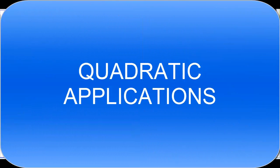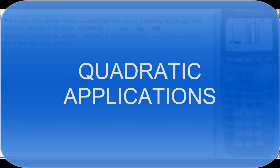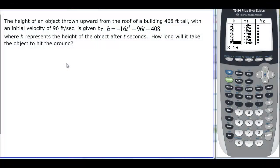This video is going to talk about quadratic applications. We have a height of an object thrown upward from the roof of a building 408 feet tall with an initial velocity of 96 feet per second, and it's given by this equation. Thankfully they give that to us, where h of t represents the height of the object after t seconds. How long will it take the object to hit the ground?